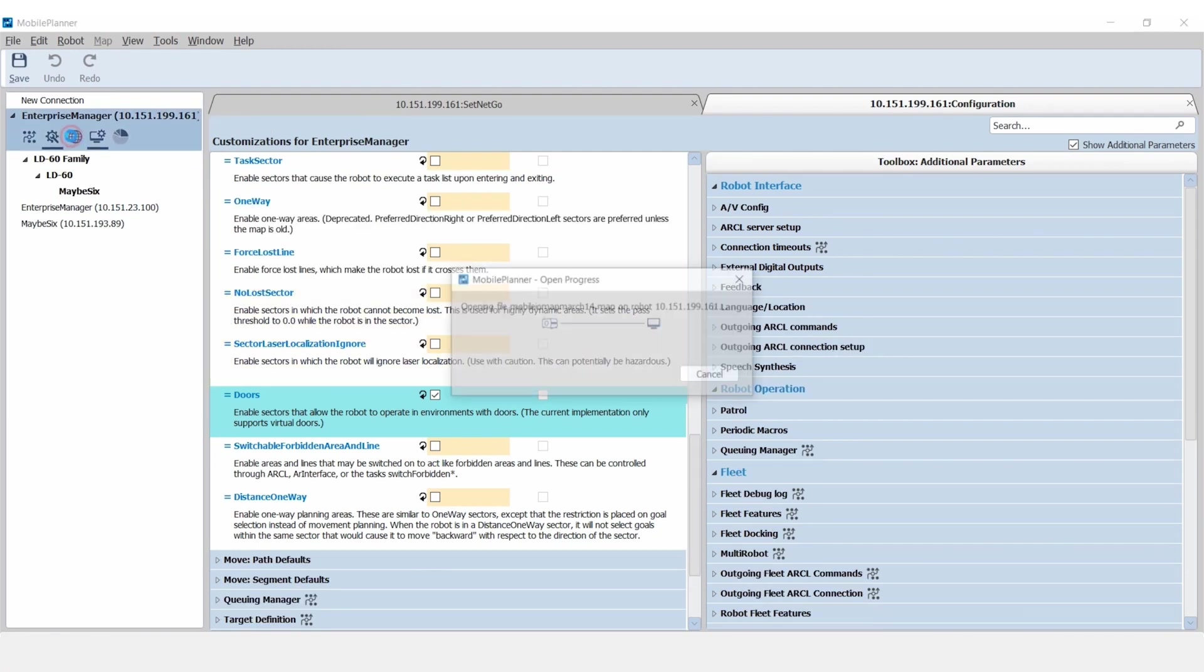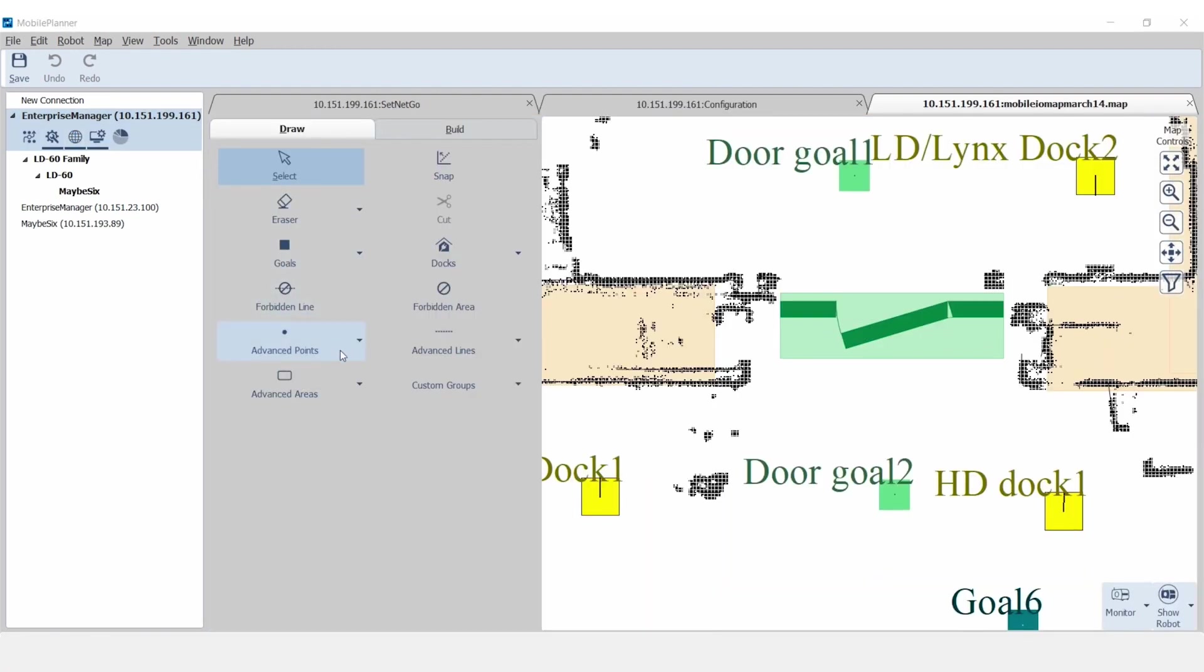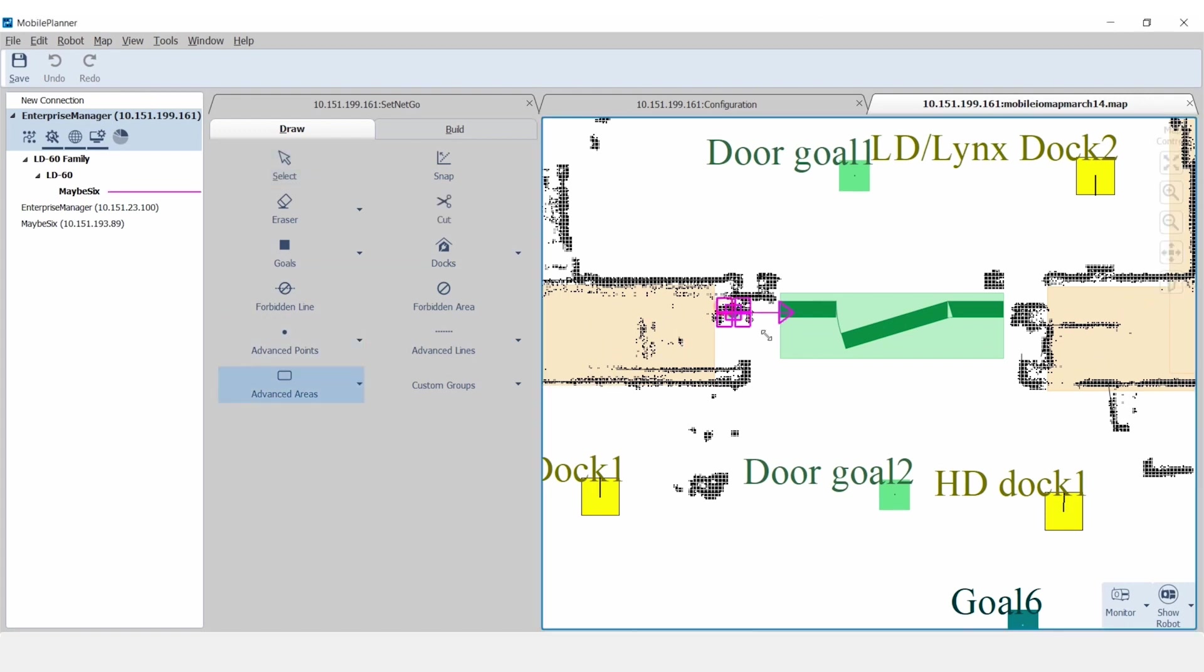In the Map tab, select Draw, Advanced Areas, Door, and add the associated goals and the alias for the digital output.